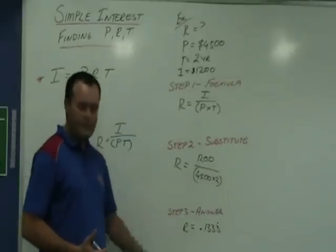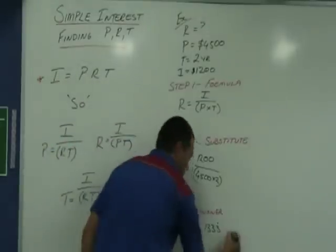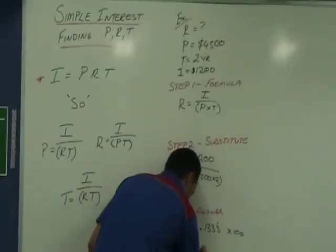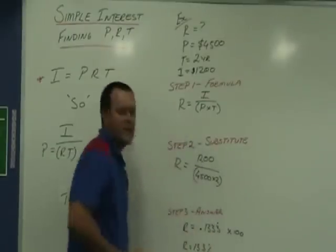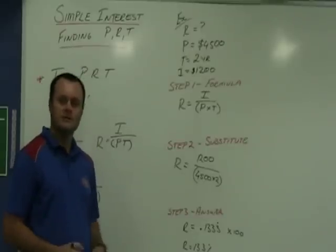Now, we know that we put those rates in as decimal fractions. So, we need to multiply by 100. And our answer is the rate is 13.3%. Nice and simple.